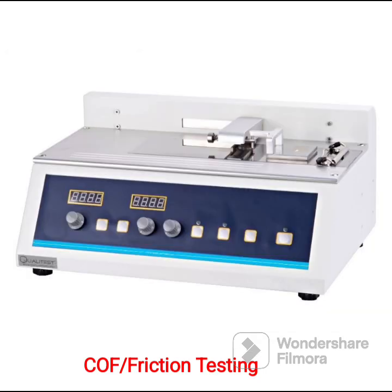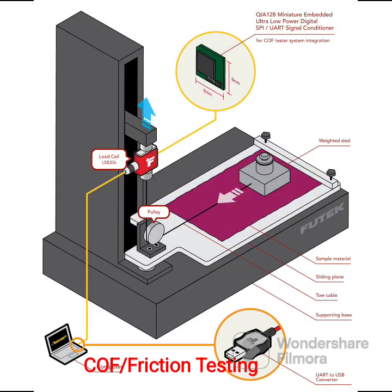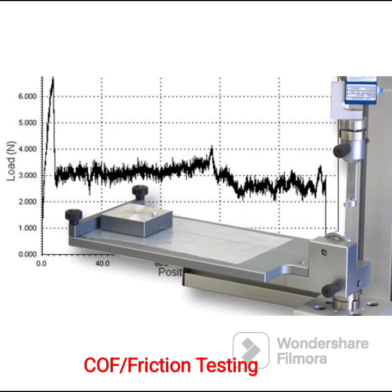Friction testing. A friction tester, also called a coefficient of friction (COF) tester, makes a measurement of a sheet-like substrate such as paper, corrugated, plastic film, or paperboard, which determines the angle of inclination at which one substrate affixed to a sled will begin to slide or slip against the surface of another substrate of a similar material.